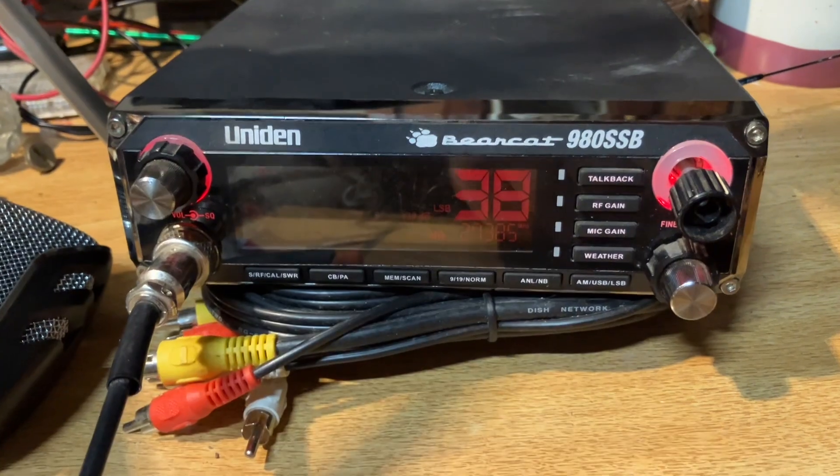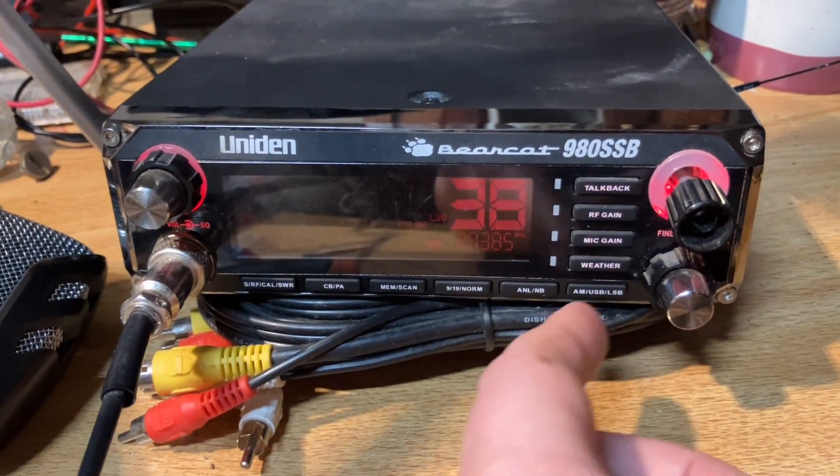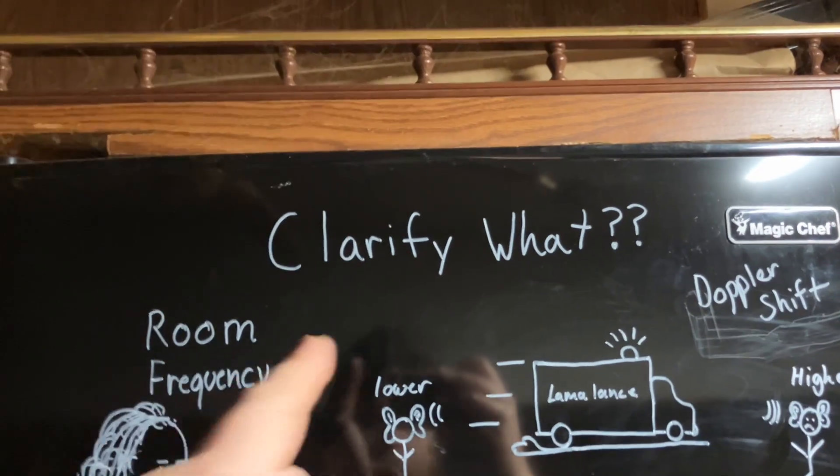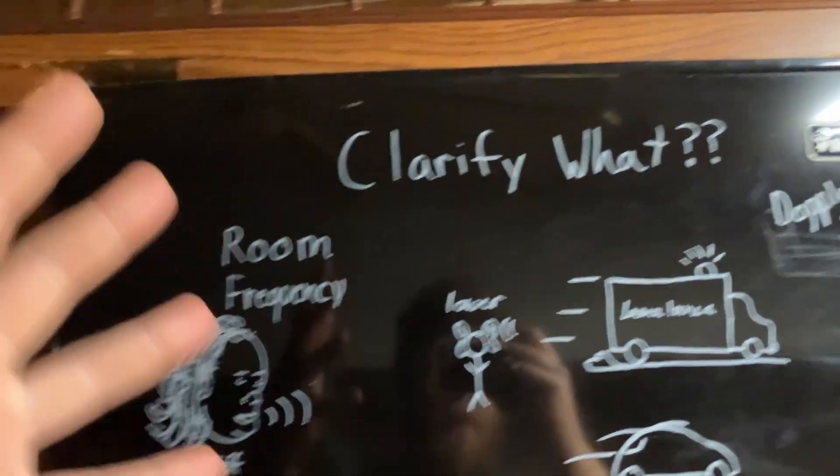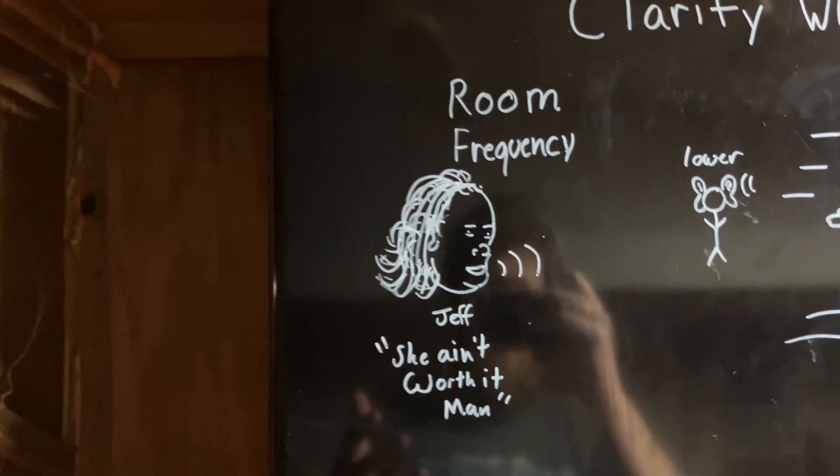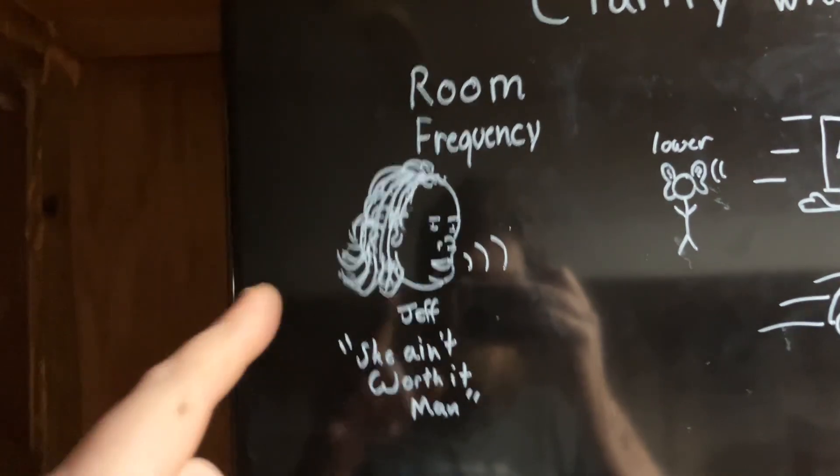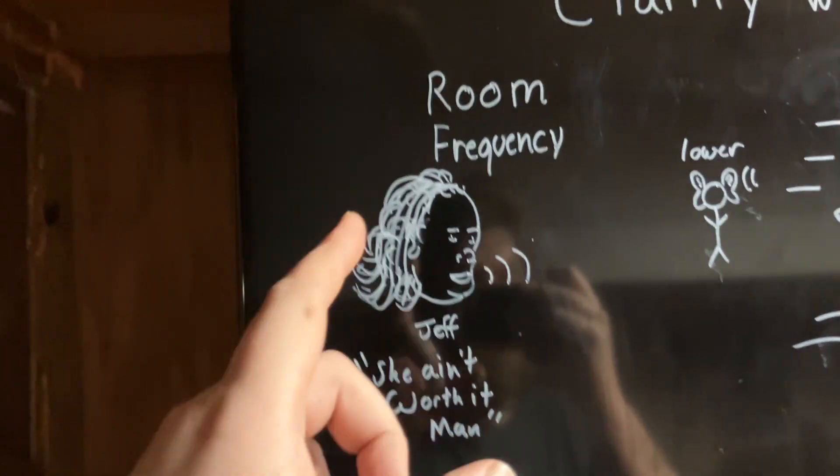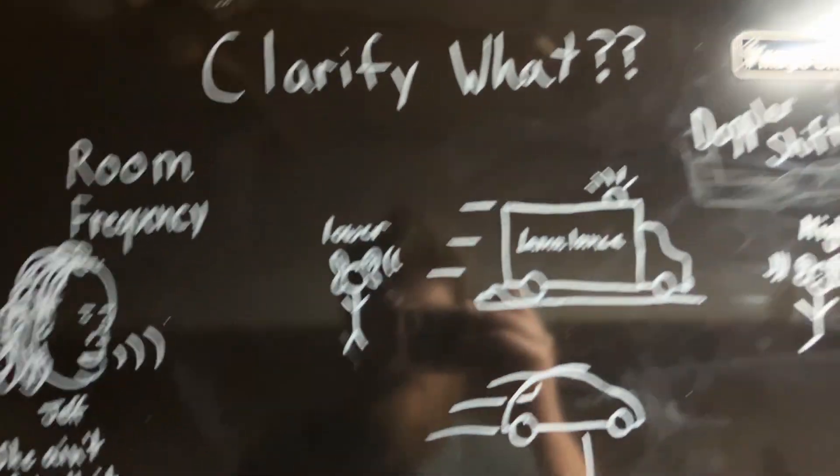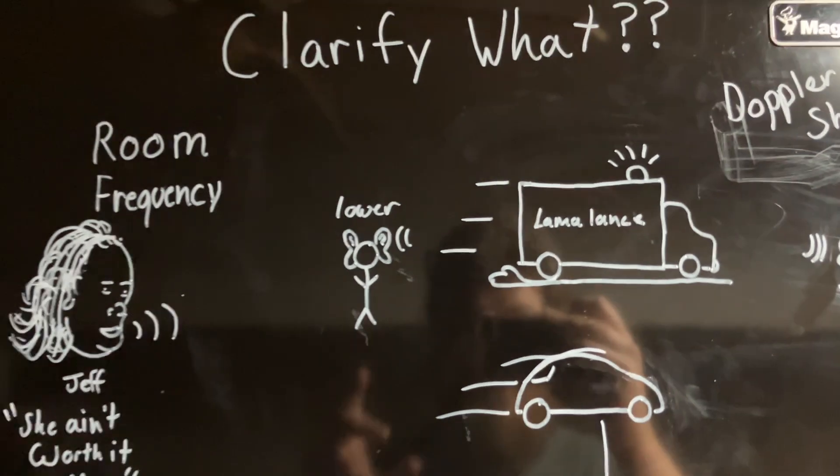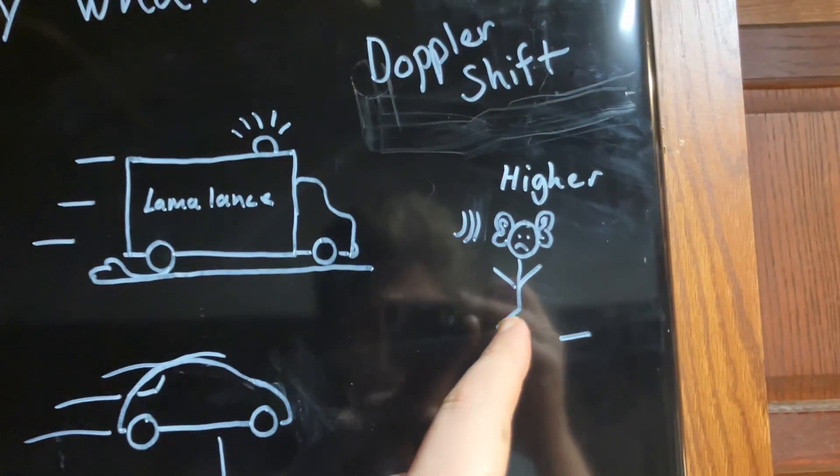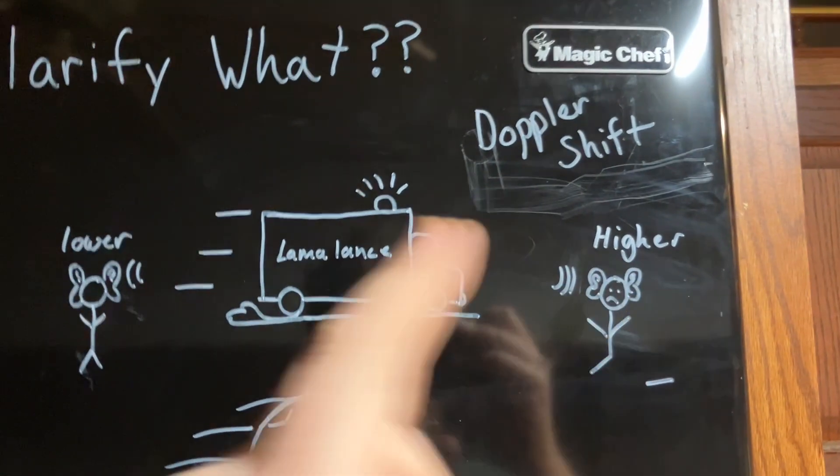So you might have some questions about the clarifier and how that works. What exactly are we clarifying? I'll give you an example. If you were standing in a room with your friend Jeff, you're going to be stationary relative to Jeff, so whatever he says you'll hear at the same frequency that he is speaking it or transmitting it. However, I'm sure you've heard an ambulance before. When it's passing you, you hear the lower frequency—it's traveling away from you. But if it's traveling toward you, it's much higher in frequency. This is called a Doppler shift.